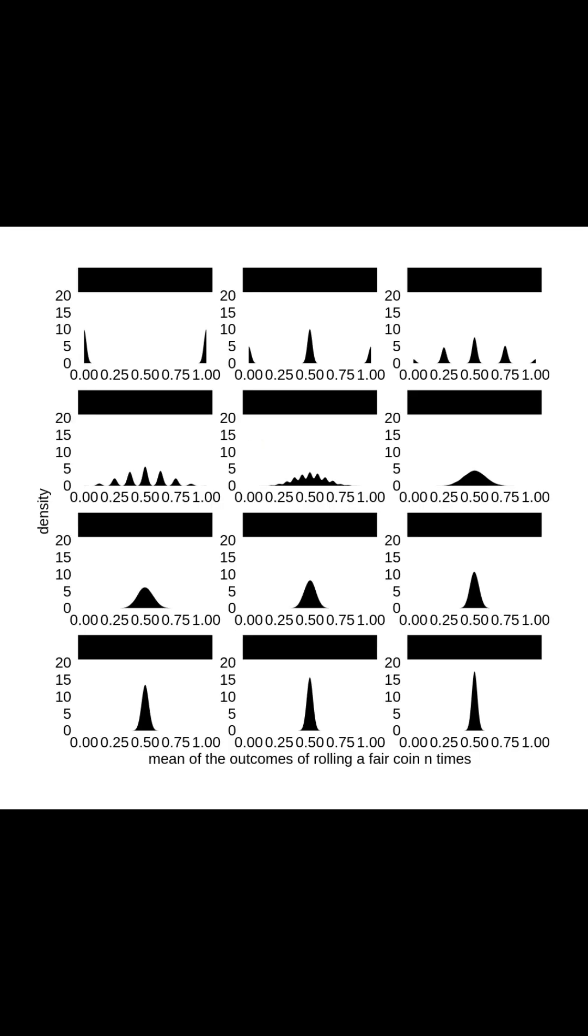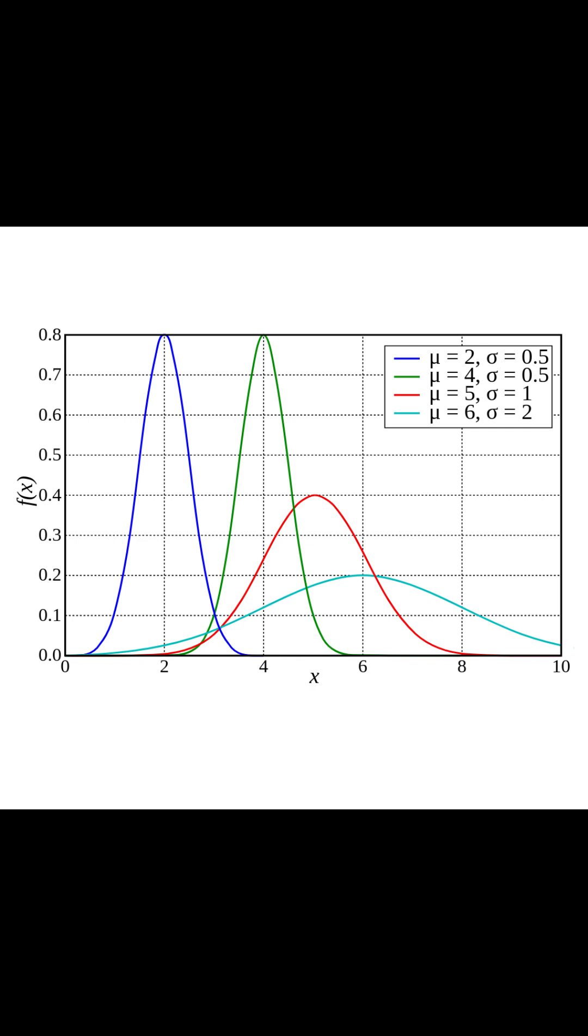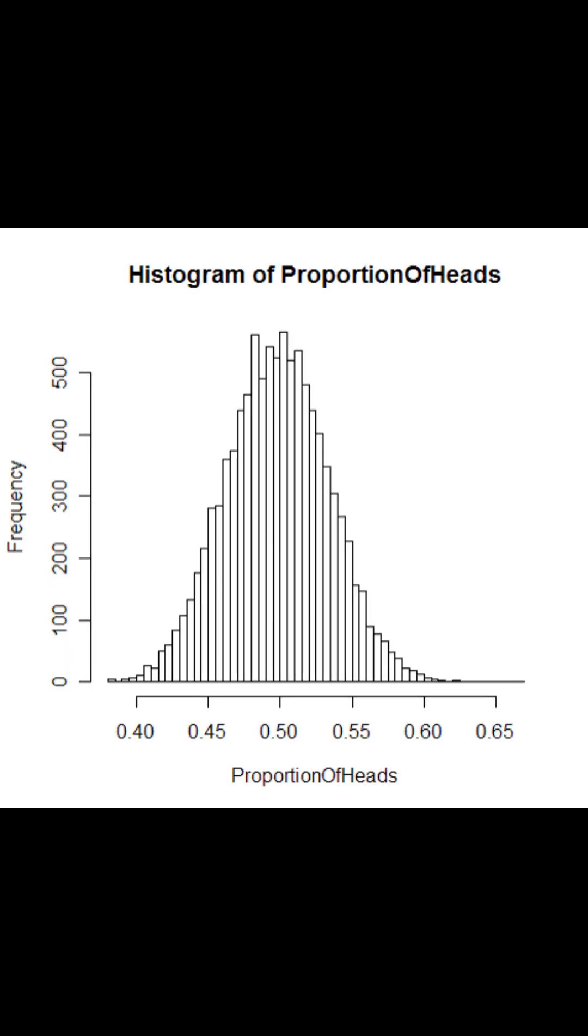One of the key reasons the normal distribution appears so often is the central limit theorem. It tells us that, under certain conditions, the sum, or average, of a large number of independent random variables tends to be normally distributed, regardless of the original distribution of the variables.